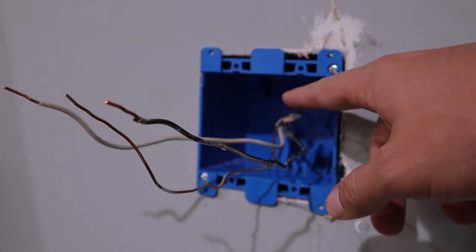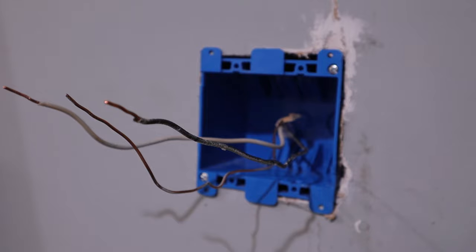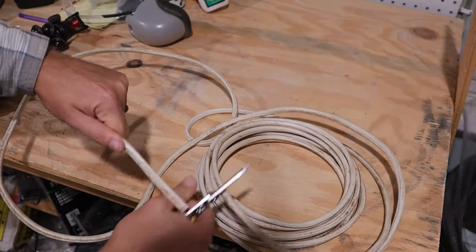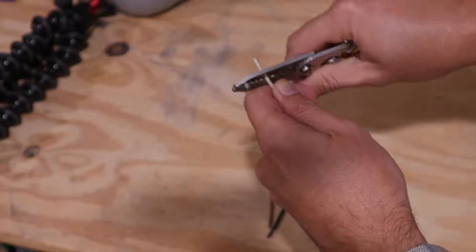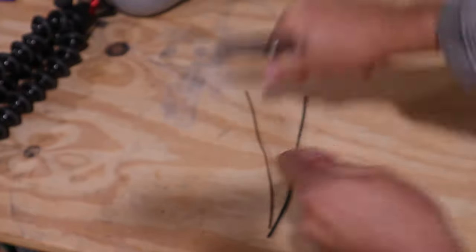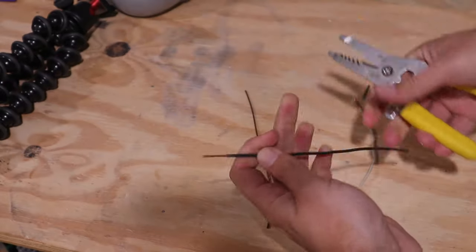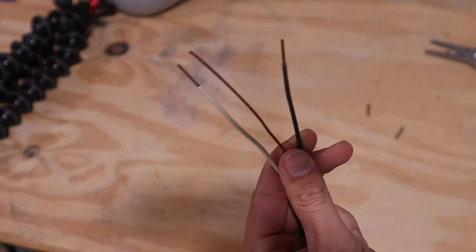Since we're going to have two receptacles here, we're going to need to make up some pigtails. Since there's two, we're going to need pigtails for each receptacle. That means that you're going to need to cut one of each wire for both receptacles. So you're going to need two ground pigtails, two neutral or white pigtails, and two black pigtails.